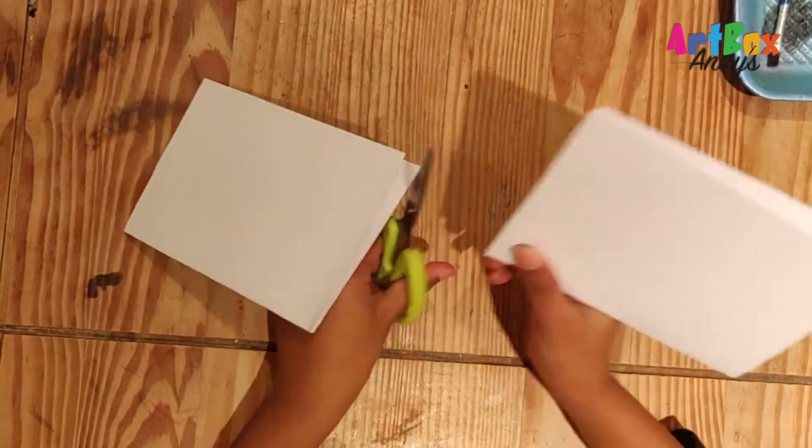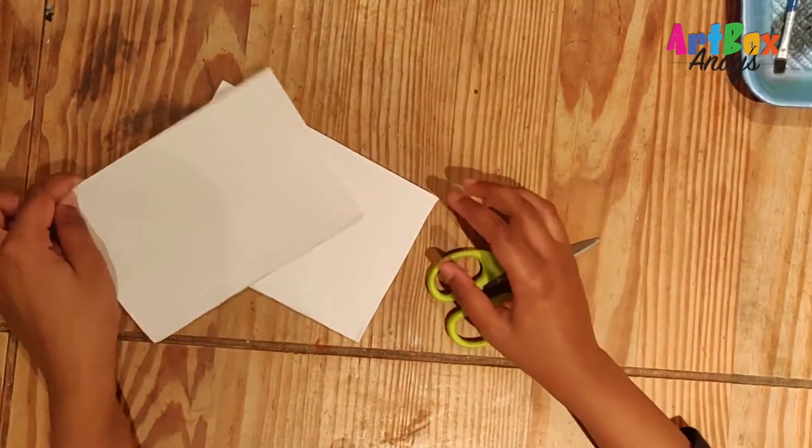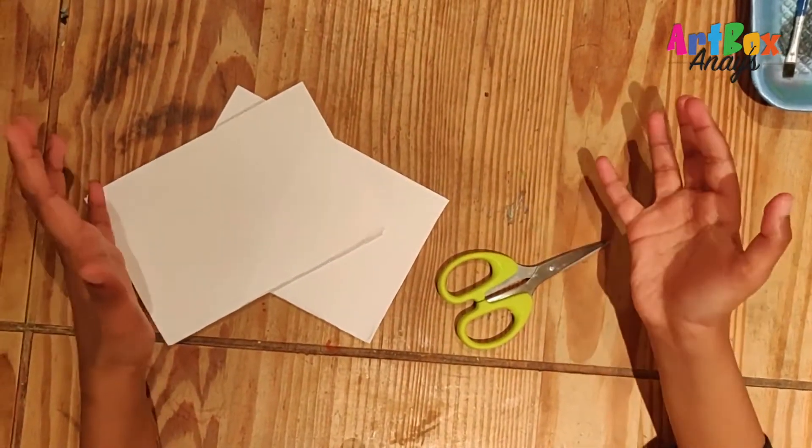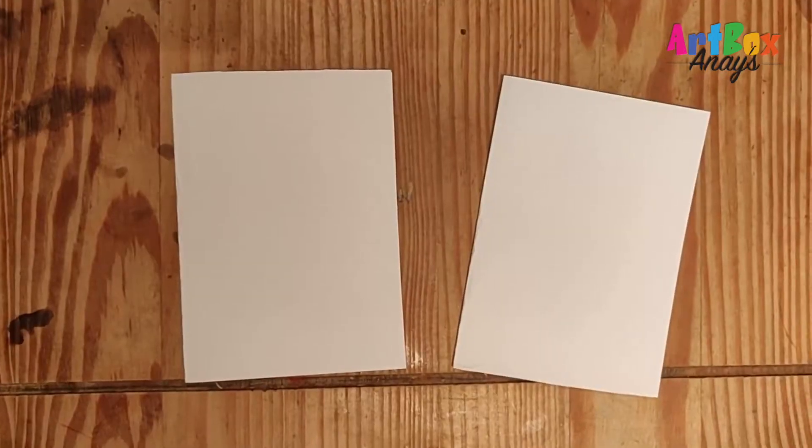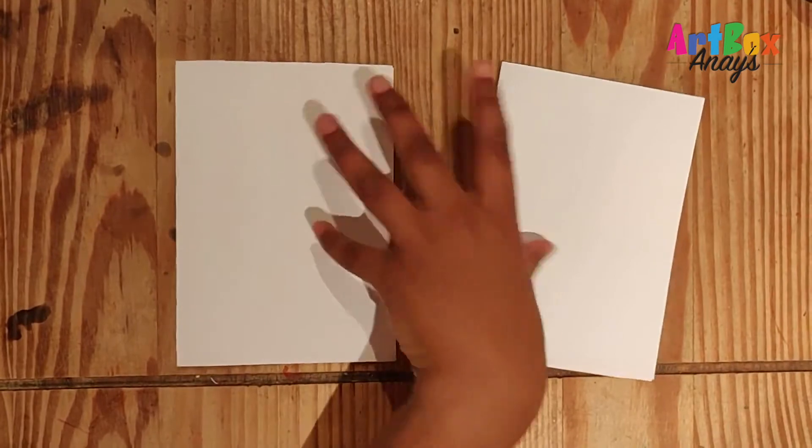And then take your scissors and then just cut this. We are going to make two cards in one sheet. And please don't forget to subscribe, share, and like this video. Now I'm going to make a border in those both sheets.